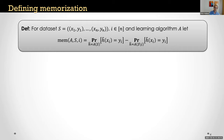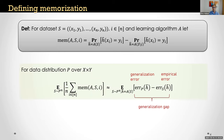This definition has a nice property: it directly relates to the generalization gap — the difference between training and test error. Specifically, for any distribution P over labeled examples and a dataset S drawn i.i.d., the expectation of the average memorization value across all examples is essentially equal to the expected generalization gap. This means all algorithms with a large generalization gap must memorize a significant fraction of labels. Since deep learning algorithms typically have very different training and test errors, they must be memorizing a large fraction of labels.